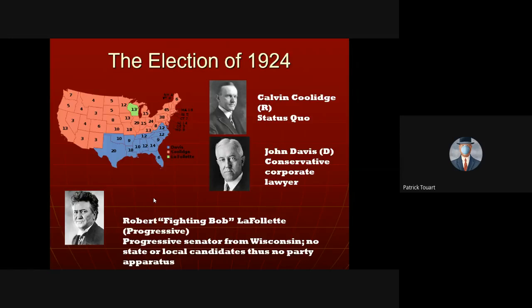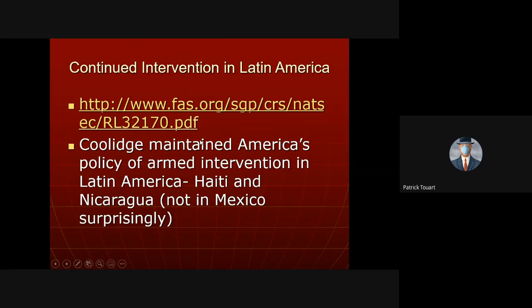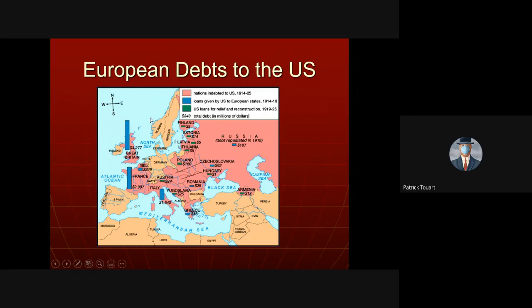Business continued under Coolidge, who maintained our policy of intervening in Latin America, tracing back to the Roosevelt Corollary. Meanwhile, Europe was hurting because the Allies owed us a great deal of money, partly due to France demanding reparations from Germany. European countries requested debt forgiveness, but Coolidge utterly rejected that. Russia simply refused to pay. Finland was the only country that actually paid us back. Everyone else ultimately just stopped paying in 1931.